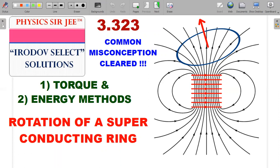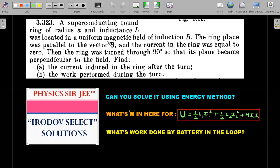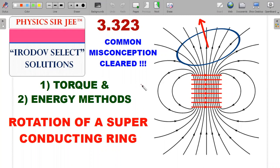Welcome back to the channel Physics Sergi. We are in the Irodov Select Solutions, and this was one of the problems given in a previous Olympiad Workout Series video. This is a question on the concept of superconductors from the Irodov problem book 3.323. The plan is to solve this problem in multiple methods — both using a torque method and an energy method, as shown in the thumbnail.